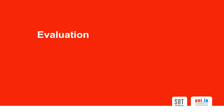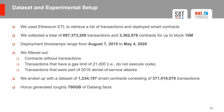We will now present the evaluation of our tool. We used the Ethereum ETL framework to retrieve a list of transactions and deployed smart contracts. We collected within the first 10 million blocks over 600,000 transactions and more than 3 million smart contracts, with deployment timestamps ranging from August 7, 2015 to May 4, 2020. We filtered out contracts without transactions, transactions that do not execute code, and transactions that were part of the 2016 denial of service attacks. We ended up with a dataset of over 1 million smart contracts and over 300,000 transactions.